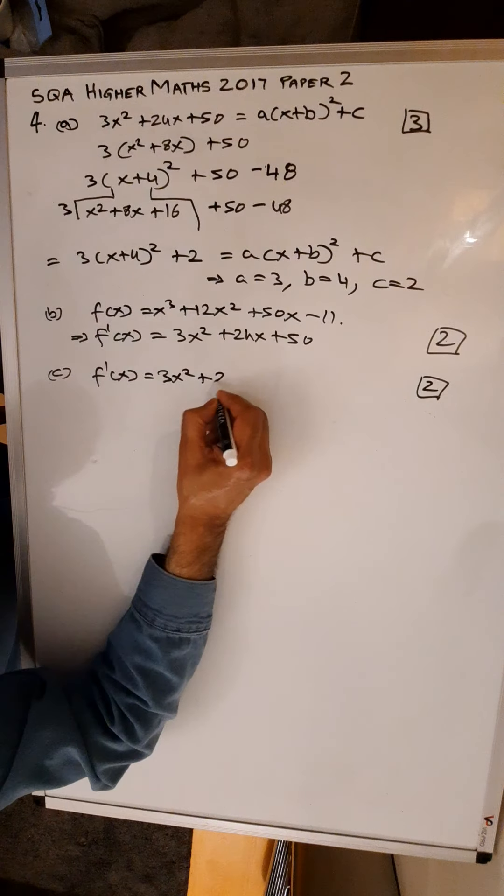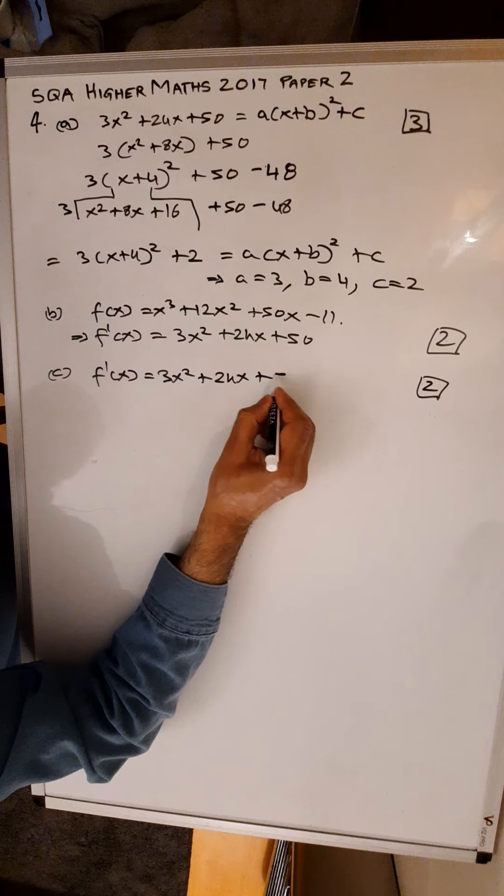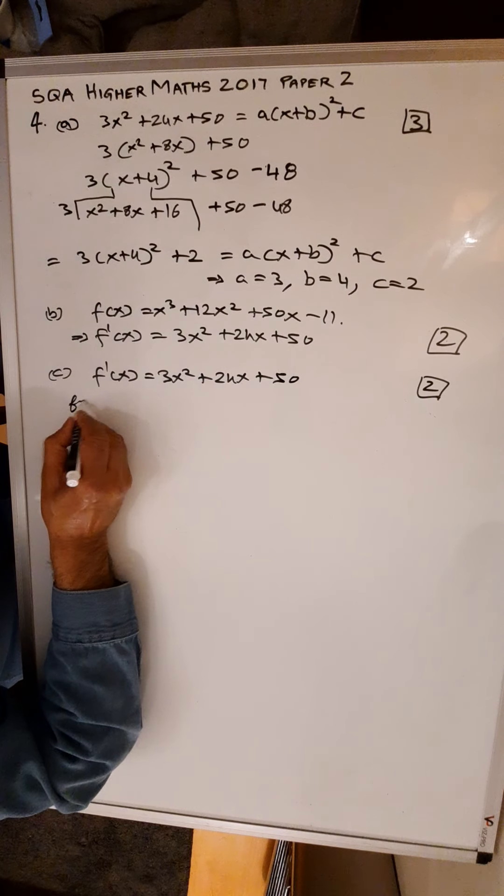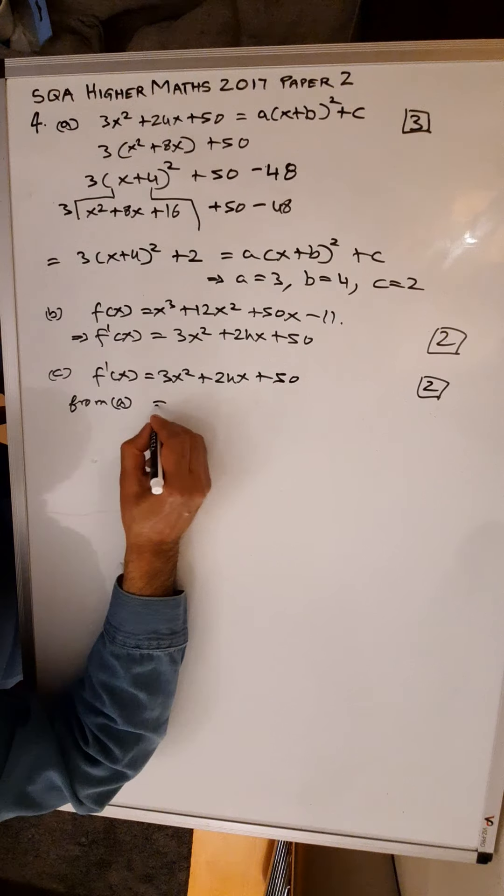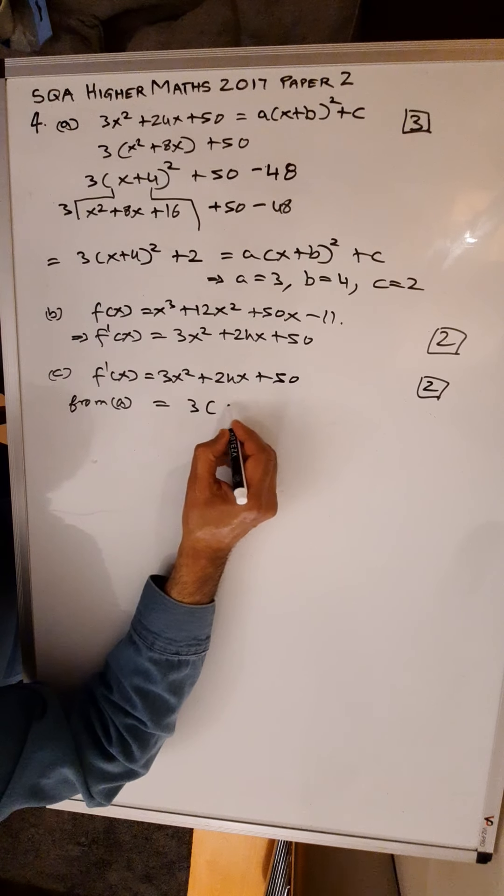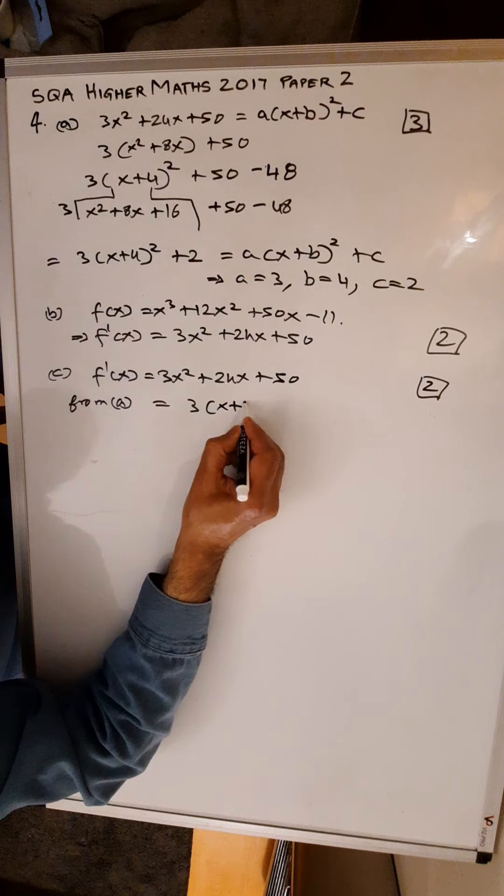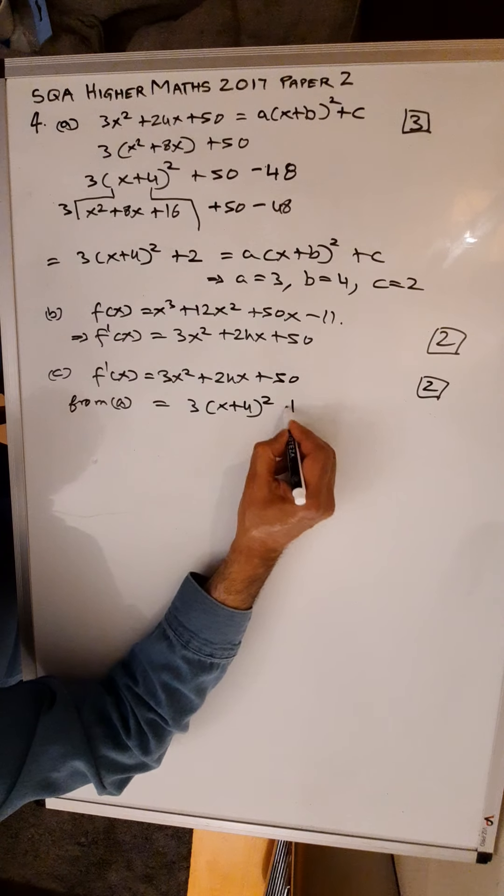f'(x) is equal to 3x squared plus 24x plus 50, which from Part A is equal to 3(x plus 4) squared plus 2.